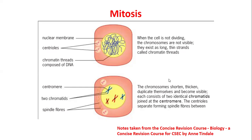Next, the chromosomes shorten, thicken, and duplicate themselves — becoming visible. They are no longer long; now they are short, thick, and now called chromosomes rather than chromatids. It's important to note that chromatin is only called chromosomes during replication. Each consists of two identical chromatids joined at the centromere, and the centrioles separate, forming a spindle fiber between them.